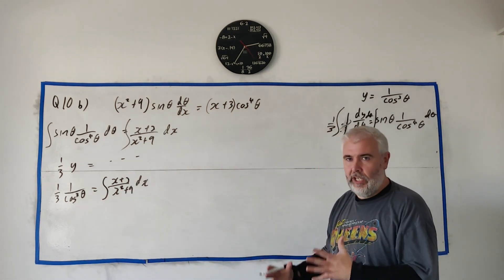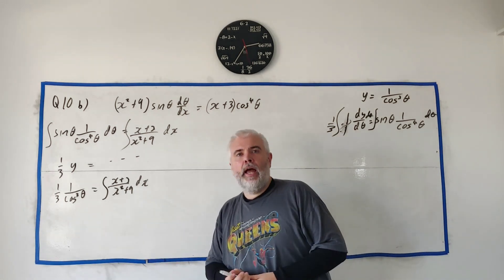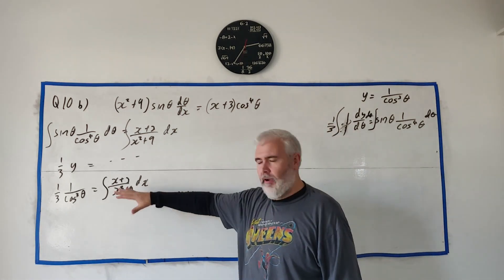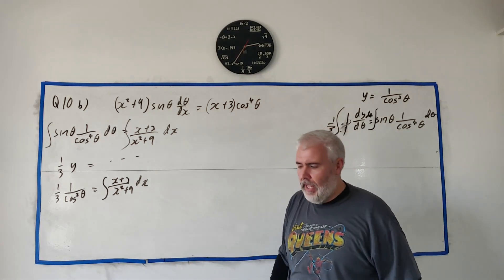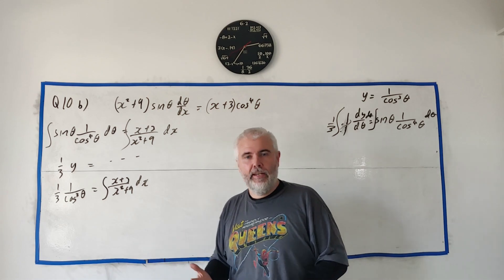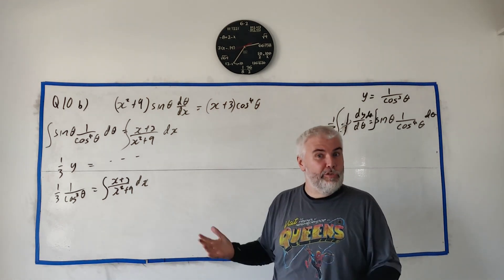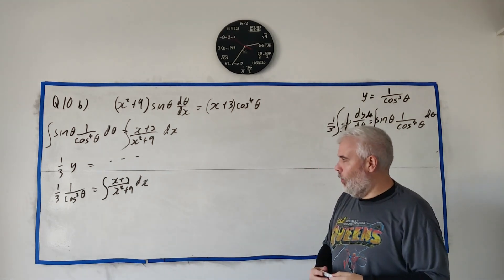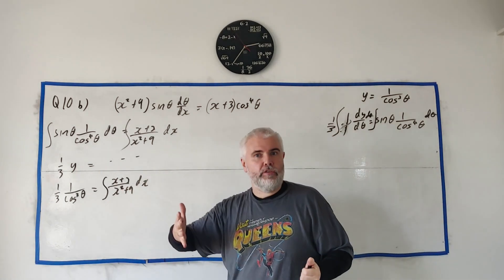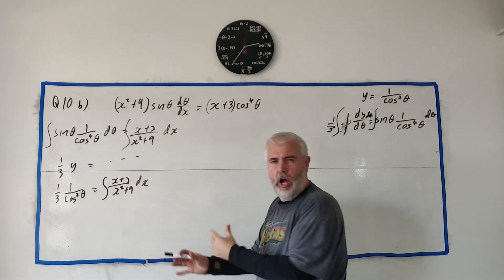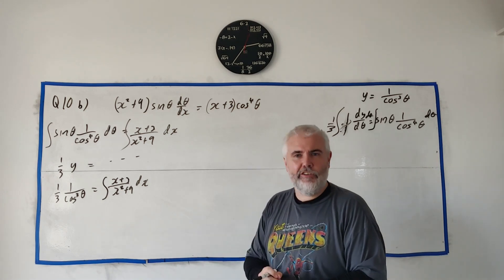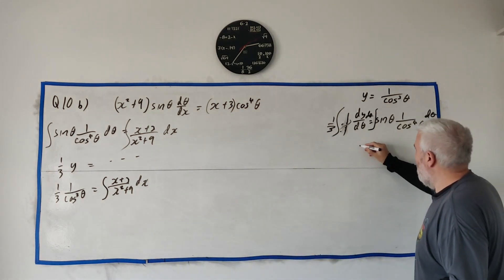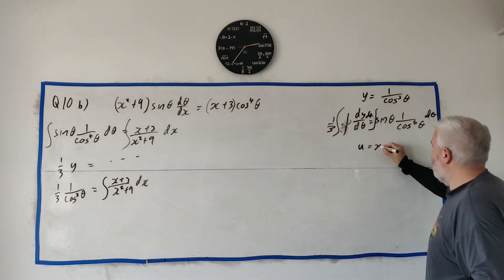This is the main part of the question: the integral of x plus 3 over x squared plus 9 dx. How do you solve this? I suggest a few things to think about. When I look at a question like this, I think of substitution. The idea is to substitute the most complicated part and hopefully cancel the other part.